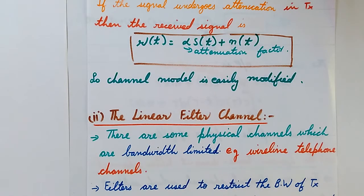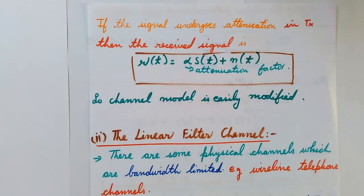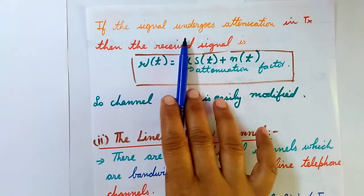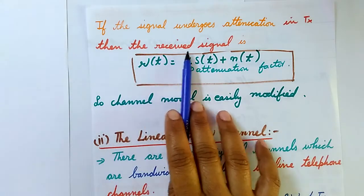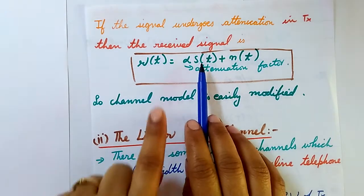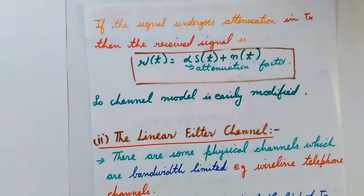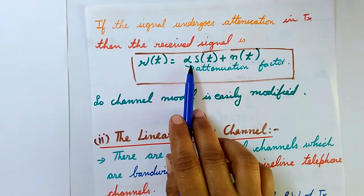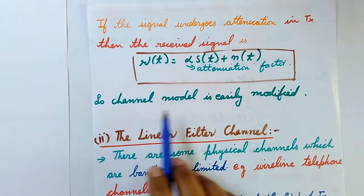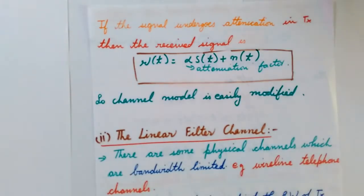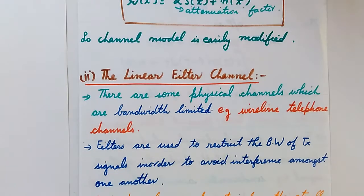This is a very common channel model. If the signal being transmitted undergoes some sort of attenuation, modification in the channel model can be easily incorporated. If the signal S(t) undergoes attenuation in the transmitter, the received signal R(t) is modified — instead of S(t) + N(t), the signal S(t) is multiplied by the attenuation factor. This attenuation factor is easily incorporated into the equation, giving us a modified channel model.